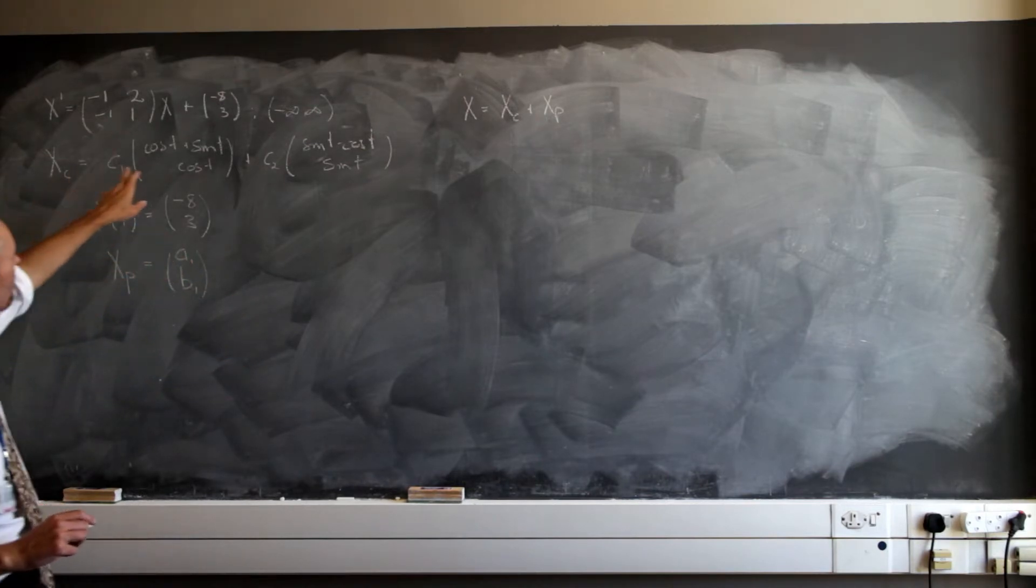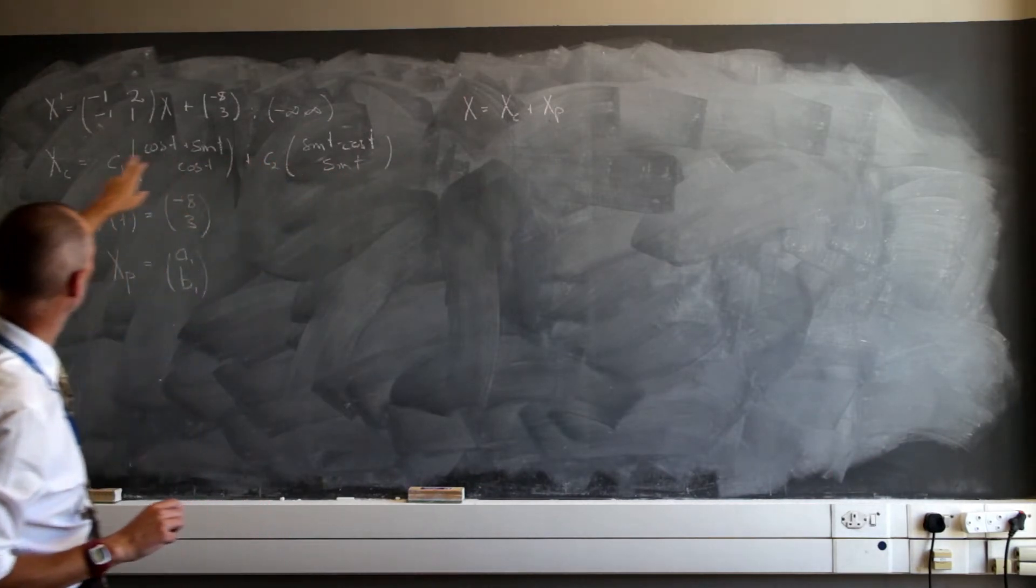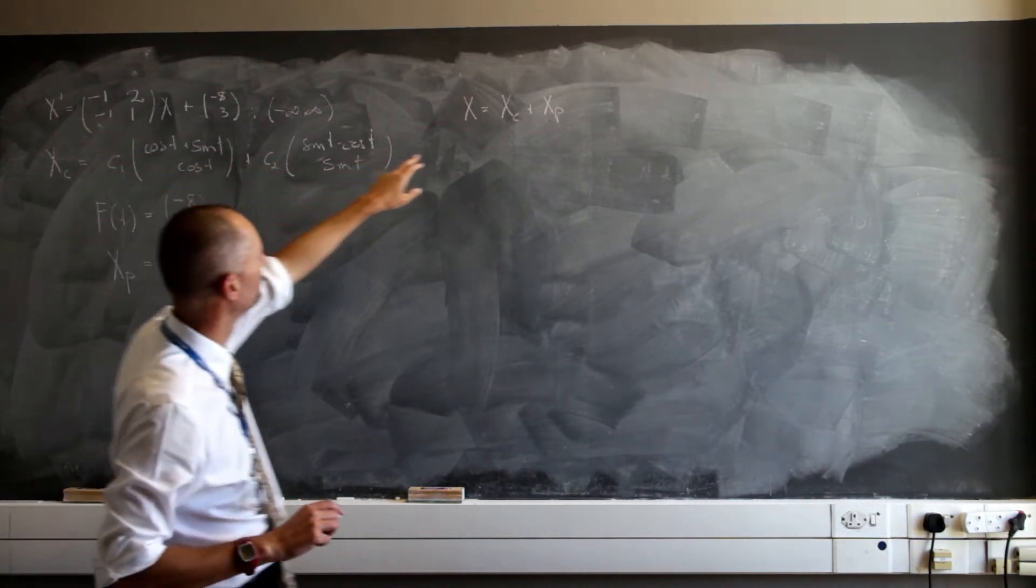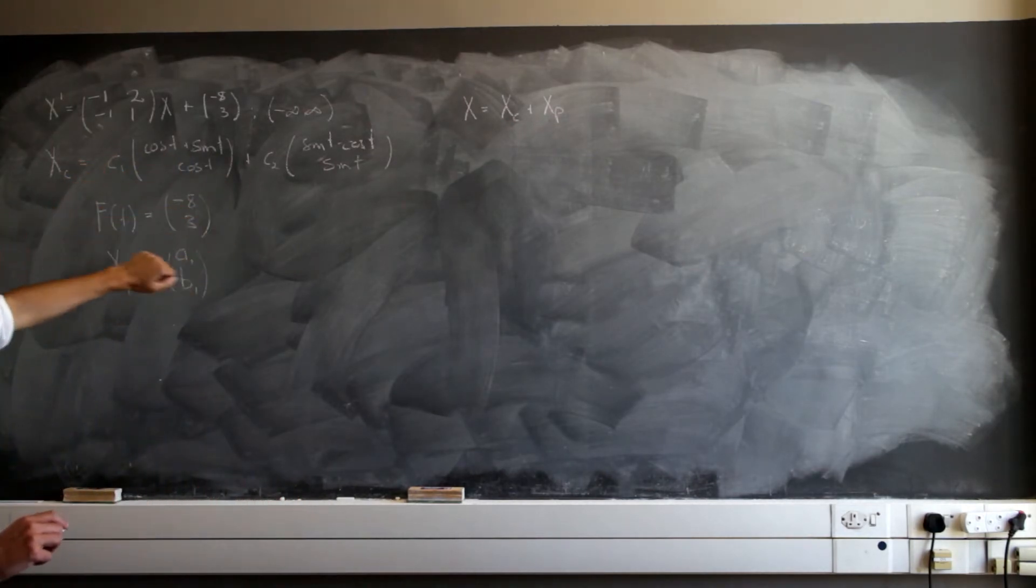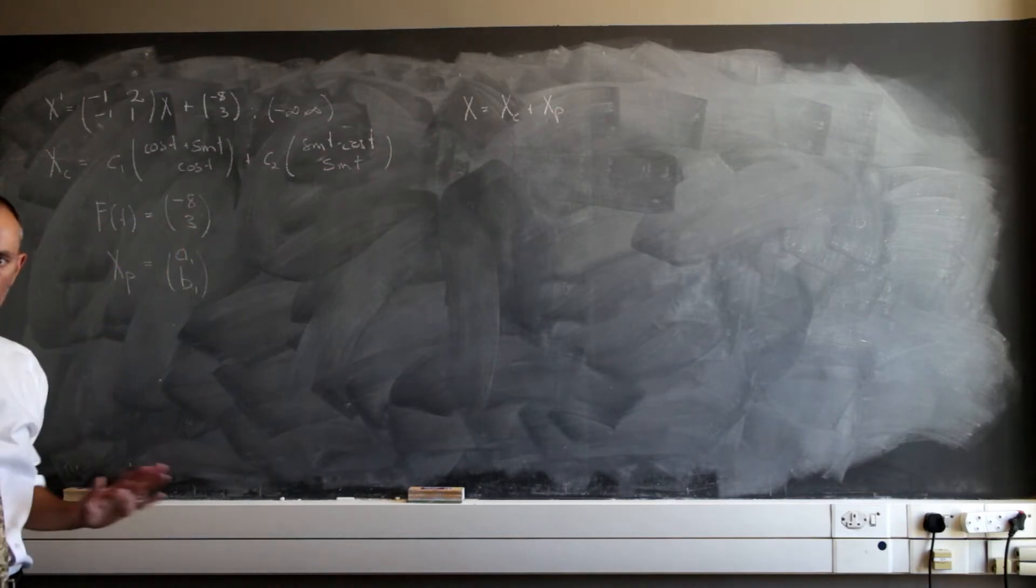Now we're going to use this. Here is our first part of the solution, the x sub c. We have that, I've already done that, check that you get the same, just using eigenvalues and eigenvectors there. And this we're going to say is our particular solution. I choose a constant and a constant, because those are two constants.